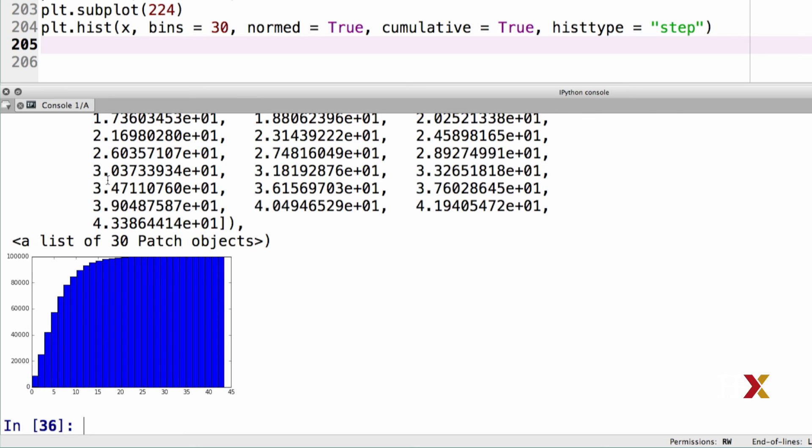We can also have both normed and cumulative options be on at the same time. In this case, I can just add normed equals true, and I can also change the histogram type.